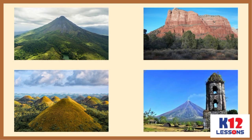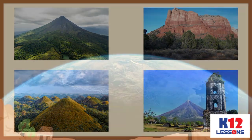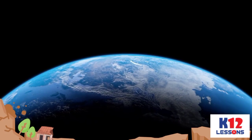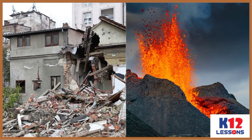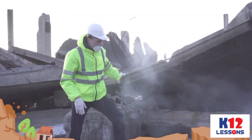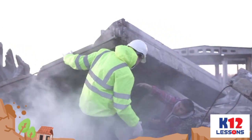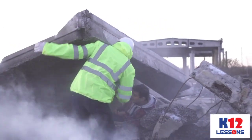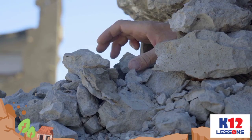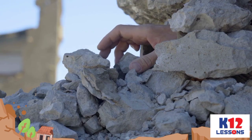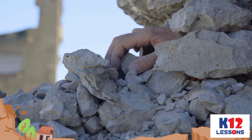Earth has many landforms. The Earth's landmasses are continuously changing due to natural phenomena such as earthquakes and volcanic activities. Earthquakes change the landscape often in a violent manner. It brings changes to the surface of the Earth. Earthquakes can be very violent, and the effect of an earthquake is usually destructive.